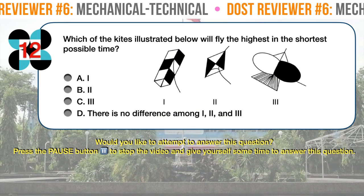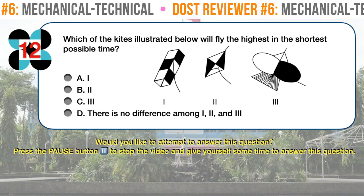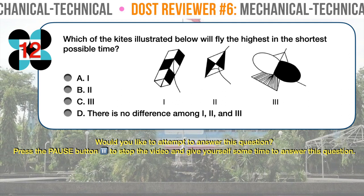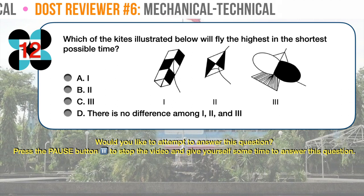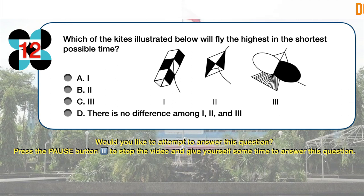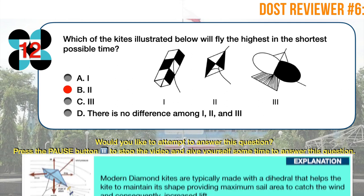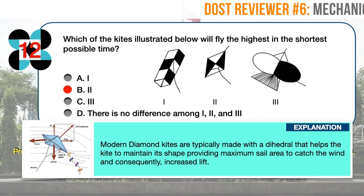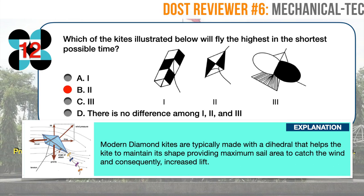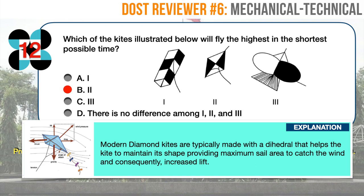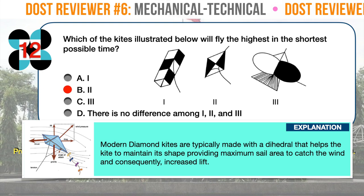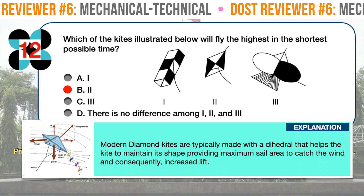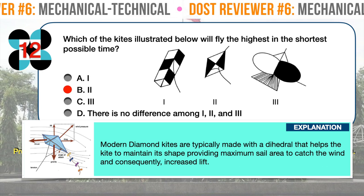Question number twelve. Which of the kites illustrated below will fly the highest in the shortest possible time? The correct answer is B: kite 2 will fly the highest in the shortest possible time. The diamond-shaped kite is the most recognized type of kite today. For centuries it has remained popular due to its stable and reliable flying characteristics, as well as the fact that it does not need much wind to fly. Modern diamond kites, sometimes referred to as eddy kites, are typically made with a dihedral that helps the kite maintain its shape, providing maximum sail area to catch the wind and consequently increase lift.